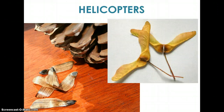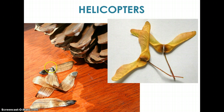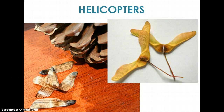Another method of dispersal by wind is the helicopter appendage. Here on the left you can see the pine samara — the black part is the seed and the appendage is that helicopter-like propeller. Maples also have this: the seed is in one section and the growth attached to it is strictly for dispersal. As the seed falls, it hopes for a gust of wind and the propeller-like shape carries it some distance away from the parent plant.